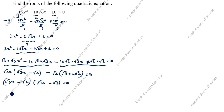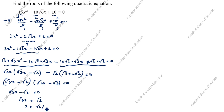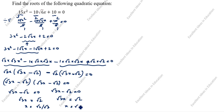So √3·x minus √2 equals 0, which gives √3·x equals √2, therefore x equals √2 divided by √3. Similarly from the second factor, √3·x equals √3 gives the same answer x equals √2 divided by √3. This is the first method.